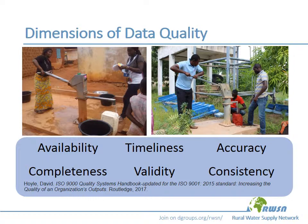Also to the extent possible, it's desirable to collect data in a method that makes results consistent and comparable across organizations so that we can begin to think about aggregating water quality information at the local, national, and international level to help inform our understanding of progress and help inform decisions to improve water quality, safely managed water, and progress on national and international targets.